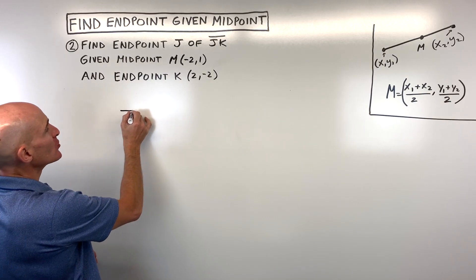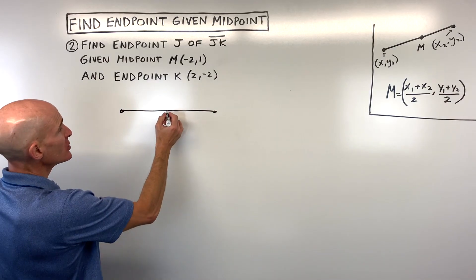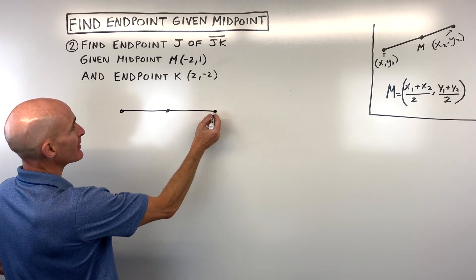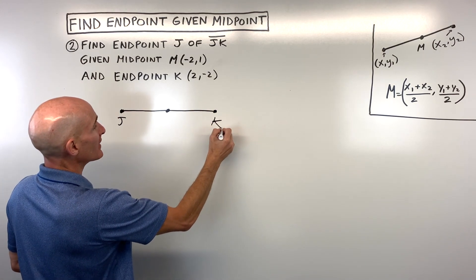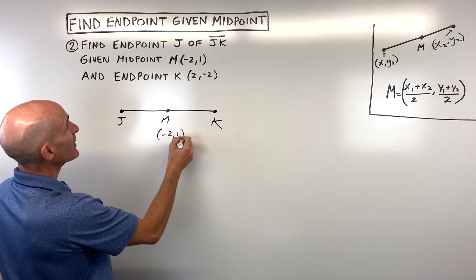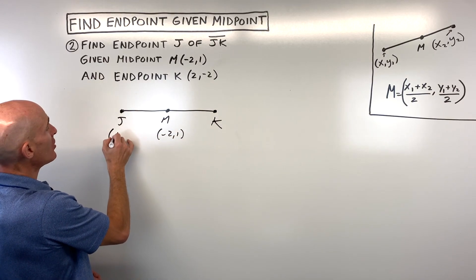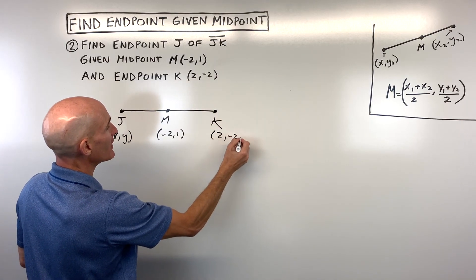The way I like to do it is just draw a segment. It doesn't have to be like a perfect graph, like in an XY coordinate plane. You can just draw something, just kind of back of the envelope style here, where we have endpoint J, endpoint K, and the midpoint here in the middle. That's negative two, one. J, we don't know, so let's call that X comma Y, and K we do know, which is at two comma negative two.